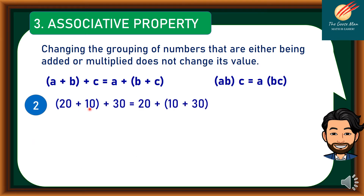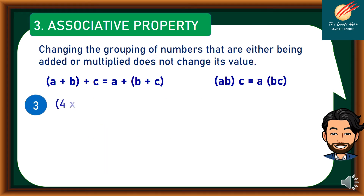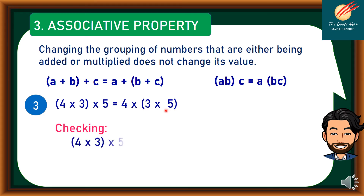Another addition example: (20 plus 10) plus 30 is the same as 20 plus (10 plus 30). Checking: 30 plus 30 equals 20 plus 40, so 60 equals 60. For multiplication: (4 times 3) times 5 equals 4 times (3 times 5). Checking: 12 times 5 equals 4 times 15, which gives 60 equals 60.